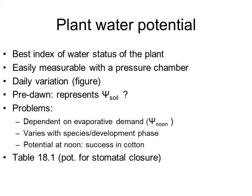Leaf water potential is easily measurable with a pressure chamber, but it is destructive — we need to cut leaves and put them in the pressure chamber to get the measurement. It has a typical diurnal variation, and the maximum value of plant water potential occurs before sunrise — the so-called predawn value.